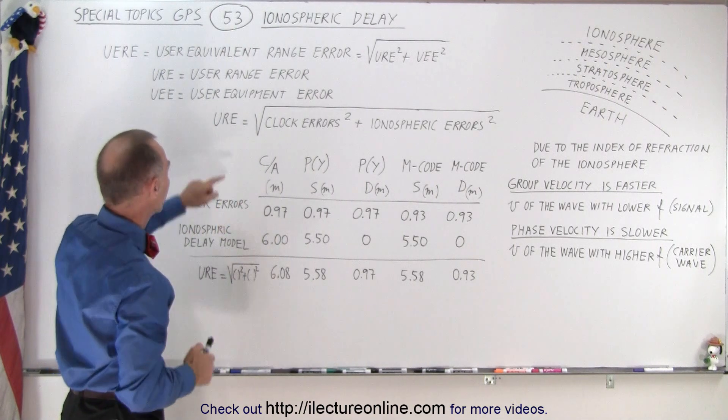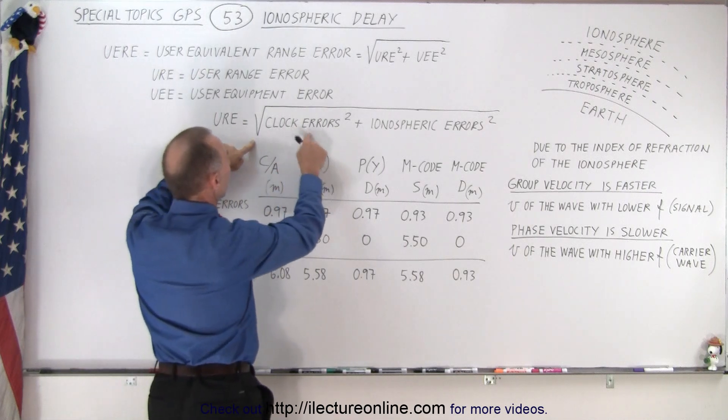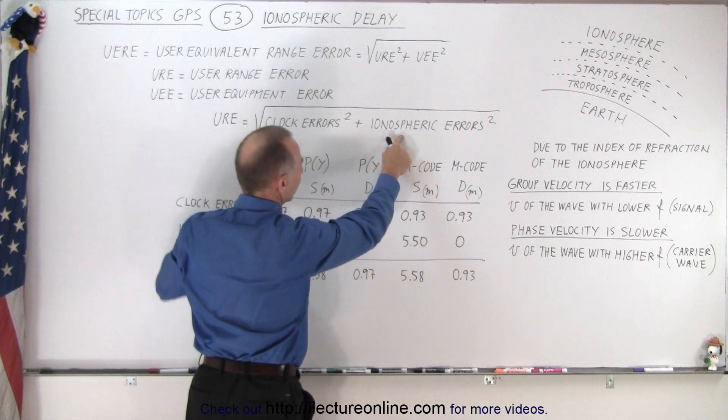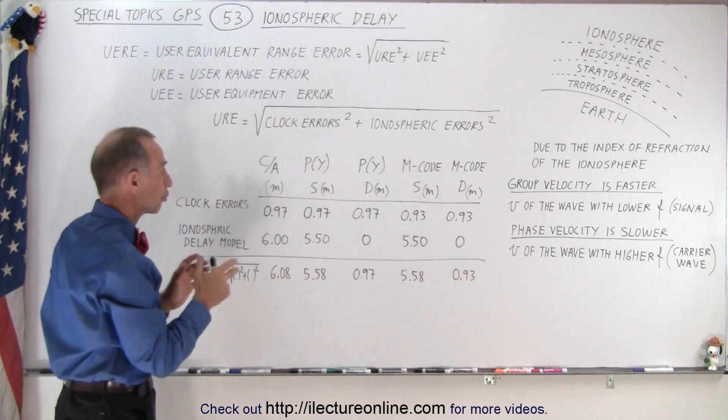We're in this video mostly concerned with the URE, which is primarily the square root of the clock error squared plus the ionospheric error squared. And the ionospheric error is usually the bigger portion of the two.